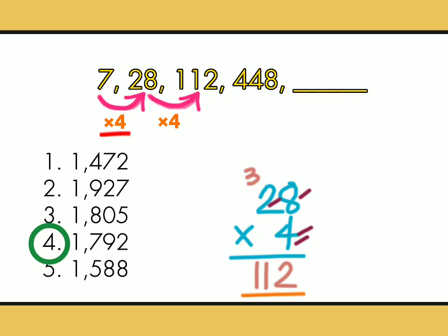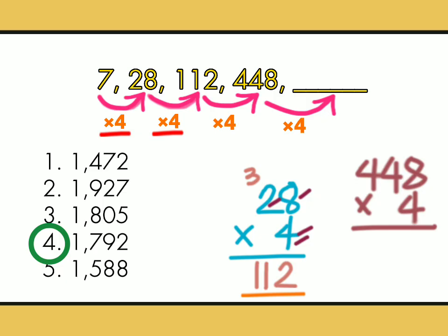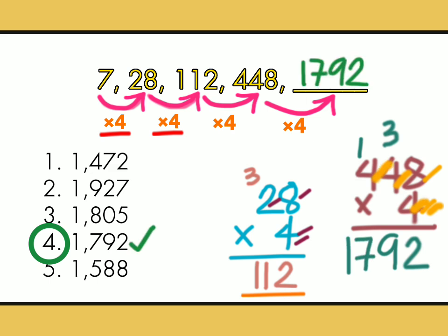So, ito na. This is times 4, times 4, so dito ay times 4 din, at another times 4. So, 448 times 4 is, 4 times 8 is 32, carry 3. 4 times 4 is 16, plus 3 is 19, carry 1. 4 times 4 is 16, plus 1 is 17. So, the answer is 1792.